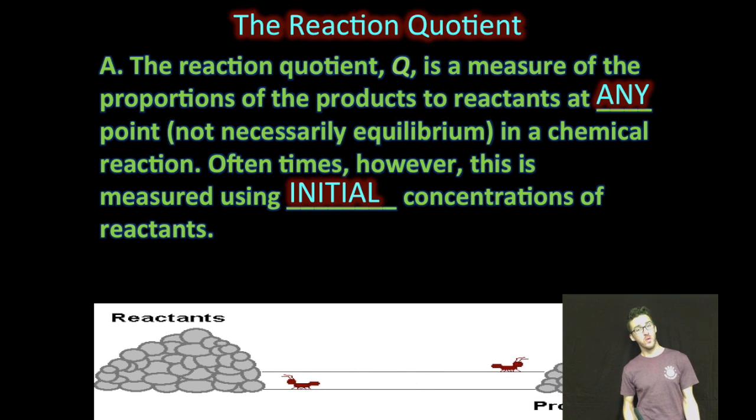Oftentimes though, we're looking at initial concentrations or initial conditions for a given reaction. So many times when we're talking about reaction quotient, we're talking about initial concentrations, but really can measure any point in the reaction. Could be equilibrium, could not be.